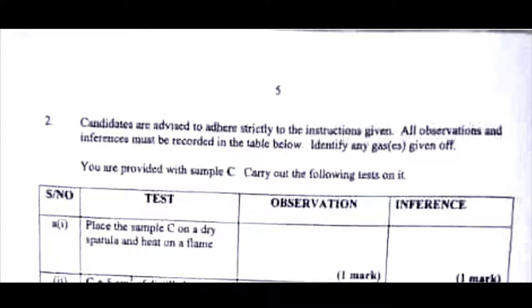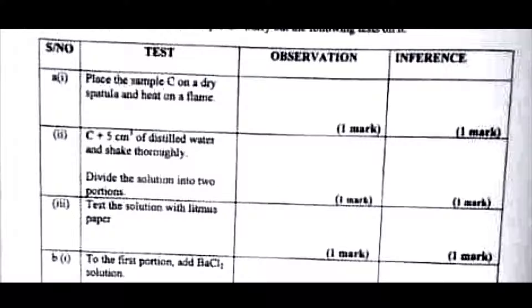Carry out the following tests on it. Remember sample C here was Na2CO3, that's anhydrous carbonate, right? So in the first test you are told to place sample C on a dry spatula and heat on a flame. This is a flame test, right? I told you about this. Flame test is used to test for cations. And why are they using flame test here? Because the cation present in the salt in sample C is not the common one that's always tested for in the syllabus using wet analysis.